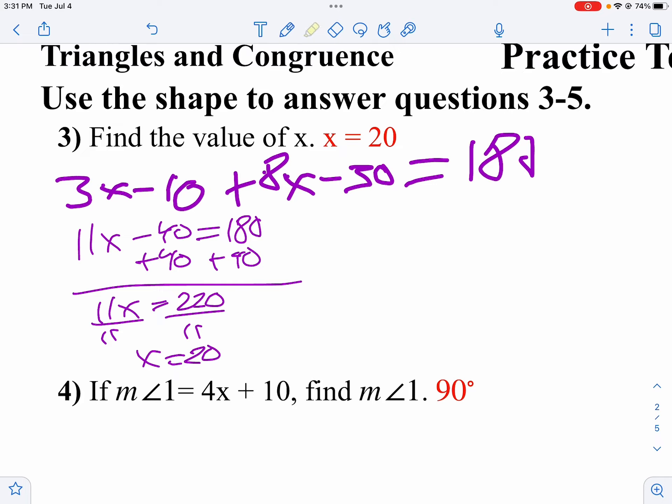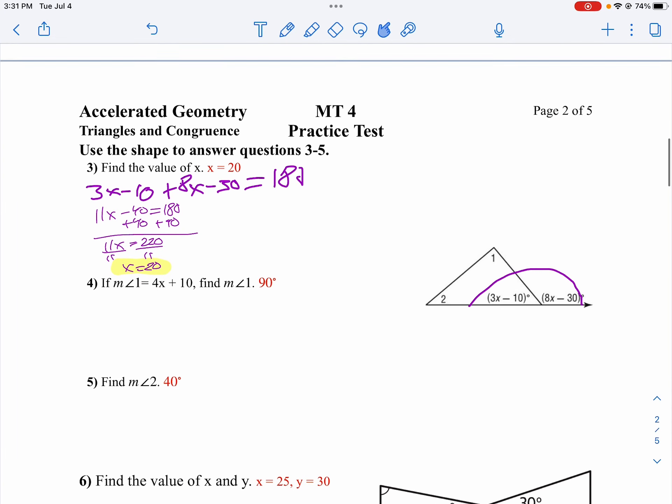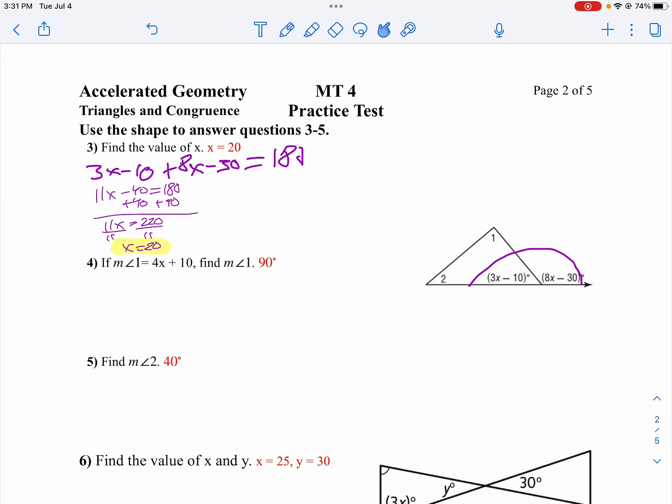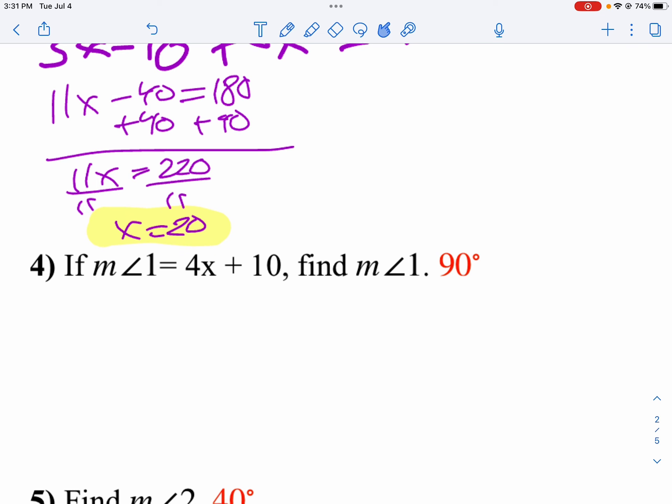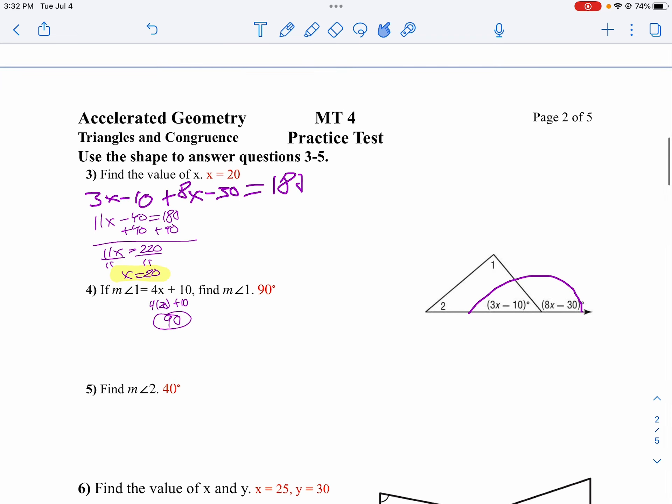x is 20. That's what I wanted to solve for that problem but let's use that fact to help us. Let's go back and find angle 1 now. Angle 1 is 4x plus 10, but we know x is 20, so we're going to go 4 times 20 plus 10, which would be 90 degrees. So we know angle 1 is 90 degrees.